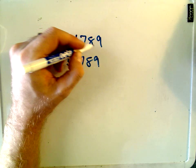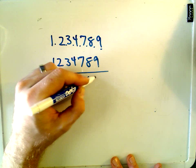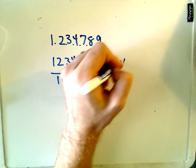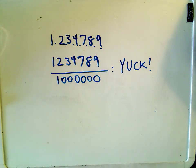We moved it 1, 2, 3, 4, 5, 6 times. So you'd have 1234789 over 1000000. Now you'd have to start reducing a big number like that. And, yuck, I would not want to simplify that down.